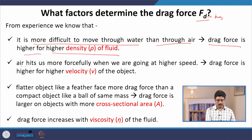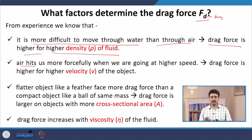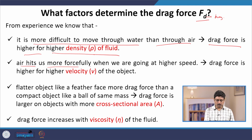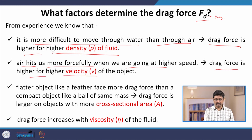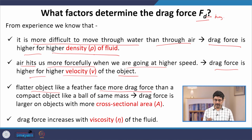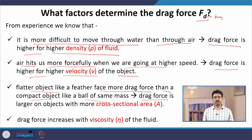Second, if you are standing still versus going at a higher speed — for example, sitting near the window in a moving train — air hits us more forcefully when we are going at higher speed. This means the drag force is higher for higher velocity of the object moving through the fluid. Third, a flatter object like a feather faces significantly more drag force than a more compact, round object like a cannonball of the same mass. So the more the cross-section of the object, the higher the drag force.